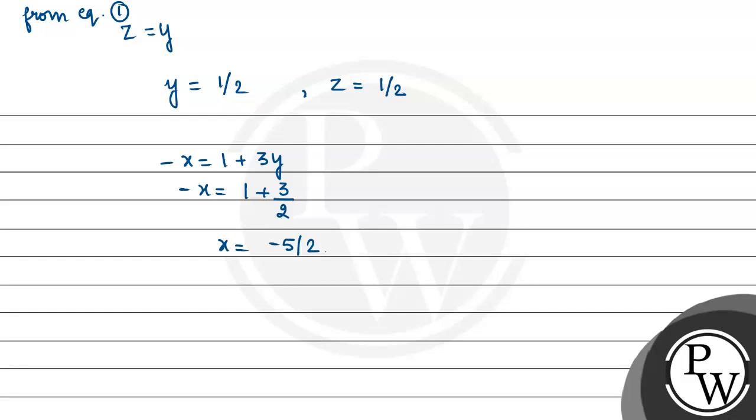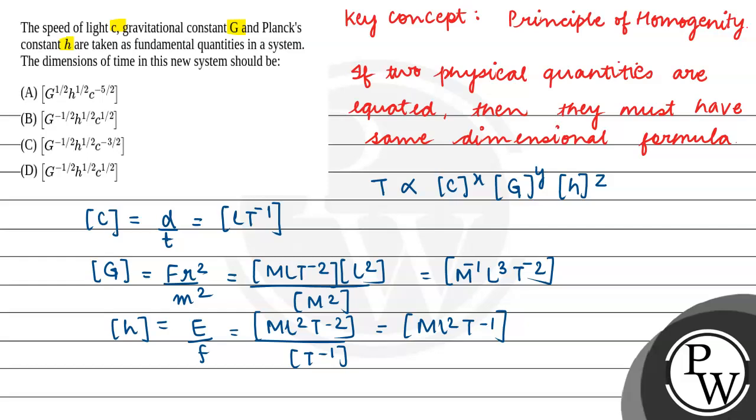Now we have all the values, so we substitute all the values. Time is directly proportional to c to the power x, G to the power y, and h to the power z. So T is directly proportional to c to the power minus 5 by 2, G to the power 1 by 2, and h to the power 1 by 2. So our correct option is c to the power minus 5 by 2, h to the power 1 by 2, and G to the power 1 by 2. So option A is correct. Hope you understood it well. Best of luck.